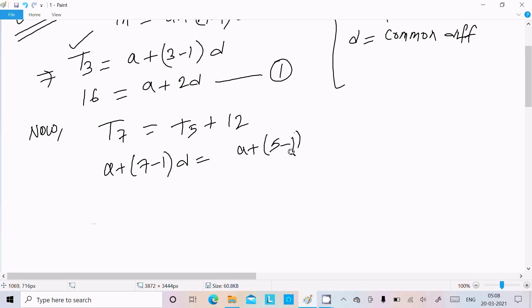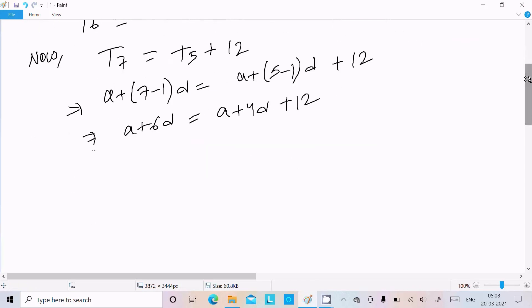Now solve this. We have a plus 6d equals a plus 4d plus 12. Moving everything to the left side, a plus 6d minus a minus 4d equals 12. The a terms cancel, so 6d minus 4d equals 12, which gives 2d equals 12. Therefore d equals 12 by 2, which equals 6. So the common difference is 6.